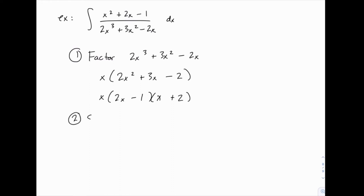So then we need to set up our partial fractions. This complicated looking rational function, we now know the denominator is x times 2x - 1 times x + 2.